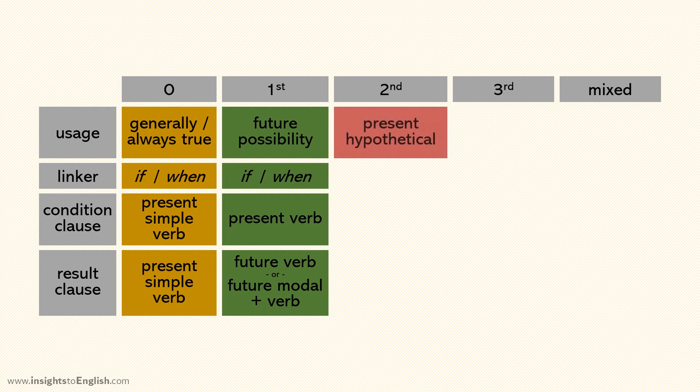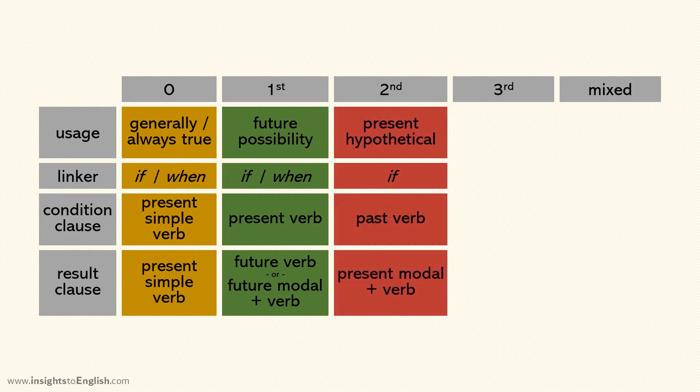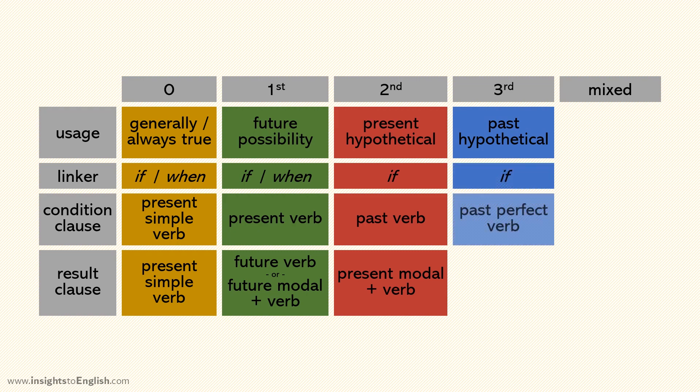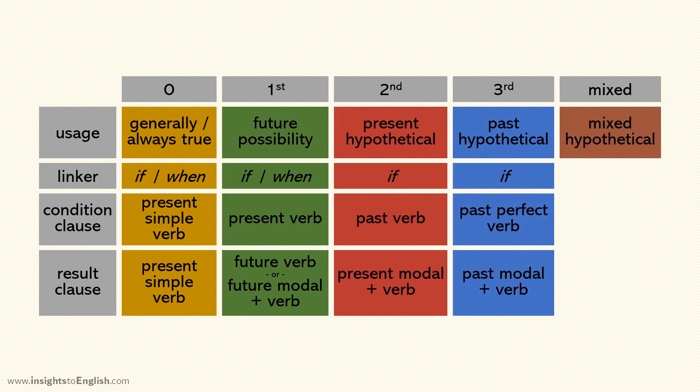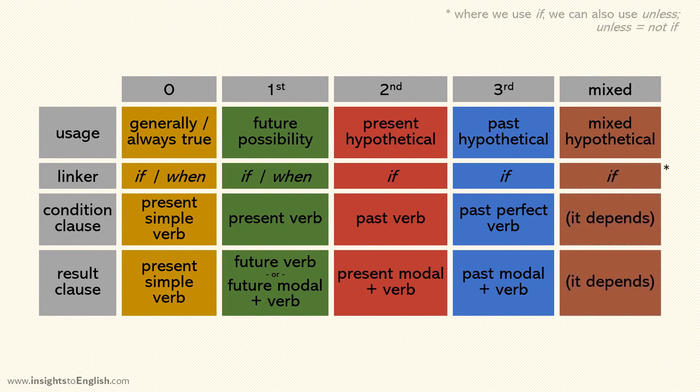The second conditional is for hypotheticals in the present or near future. We only use if before the condition clause which has a past verb. The result clause needs would or some other modal before the verb. The third conditional is for past hypotheticals. The condition clause has if before the past perfect verb and we use past modals with the verb in the result clause. Mixed conditionals are when we take the clause from one category but not the zero conditional and connect it with the clause from another category. Got it?